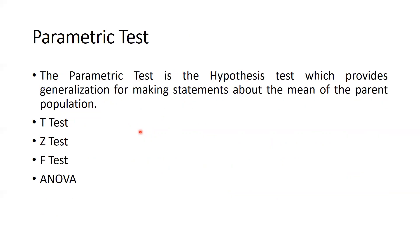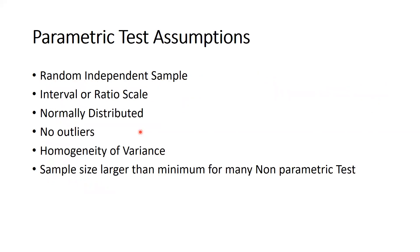The parametric test is a hypothesis test which provides generalization for making statements about the mean of the parent population. The parametric tests available are: t-test, z-test, f-test, and ANOVA (analysis of variance). Parametric test assumptions include: random independent samples, data should be at interval or ratio scale, data should be normally distributed, no outliers should be there, homogeneity of variance, and sample size larger than the minimum for many non-parametric tests.